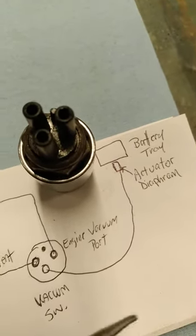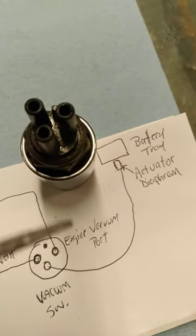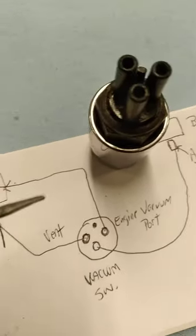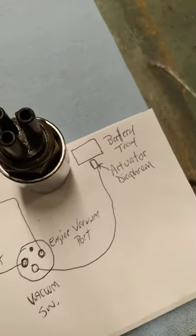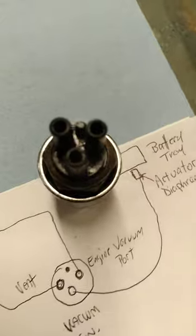The right port goes to engine vacuum. These hoses are 5/32. The hose size is 5/32.